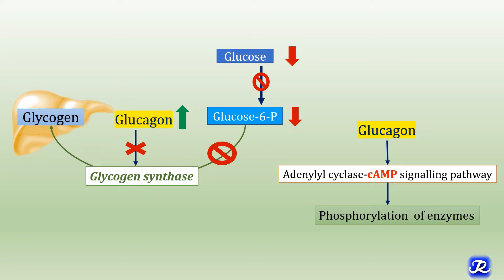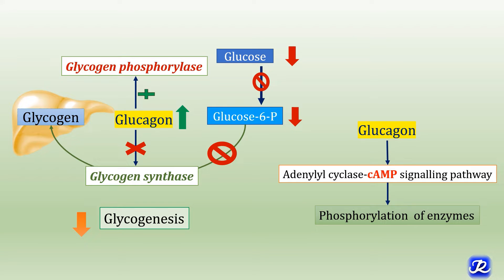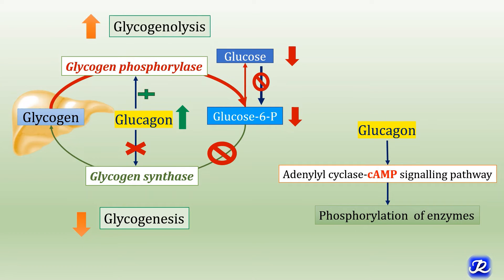Glucagon inhibits glycogen synthase by phosphorylating it, because glycogen synthase is active in the dephosphorylated condition. Therefore, decreased availability of glucose and glucose 6-phosphate, combined with inhibition of glycogen synthase by glucagon, decreases glycogenesis. In addition, glucagon activates glycogen phosphorylase by phosphorylating it, since glycogen phosphorylase is active in the phosphorylated state, leading to glycogen breakdown and increased glycogenolysis.